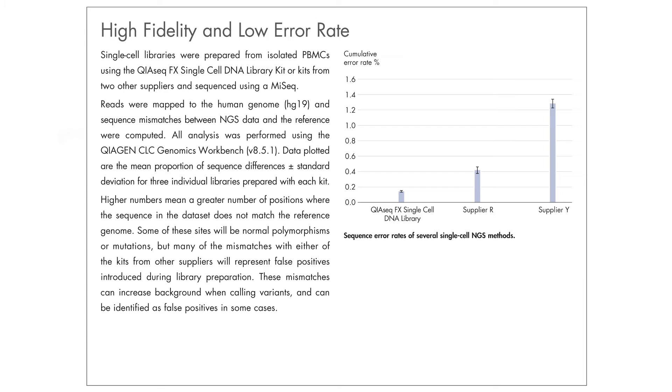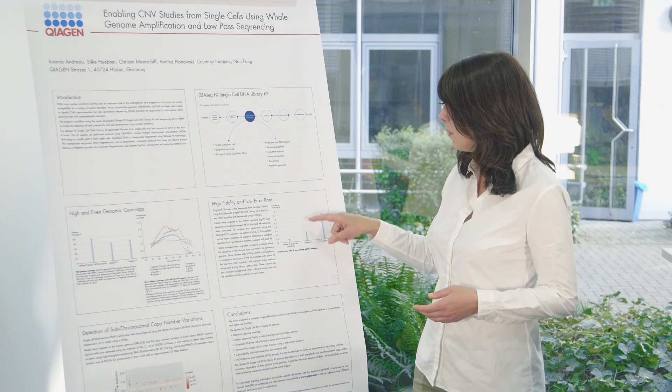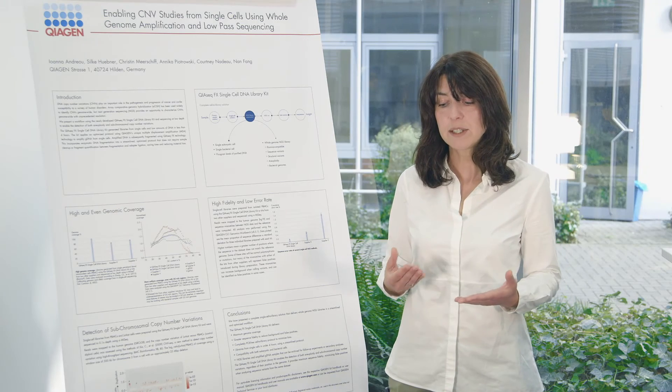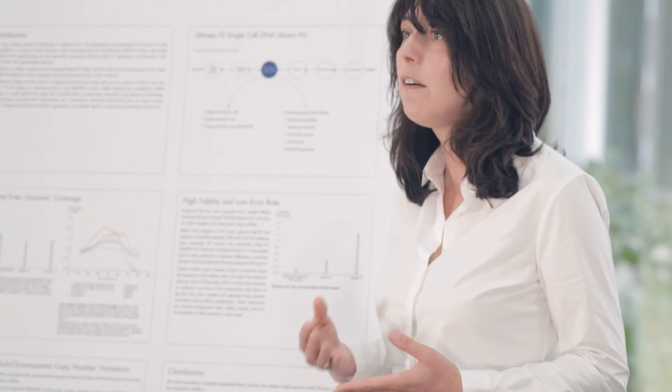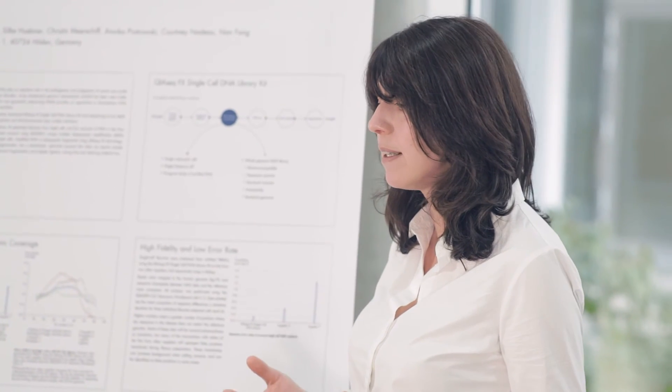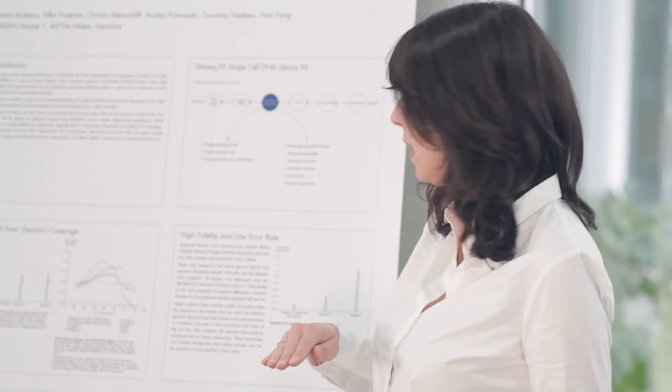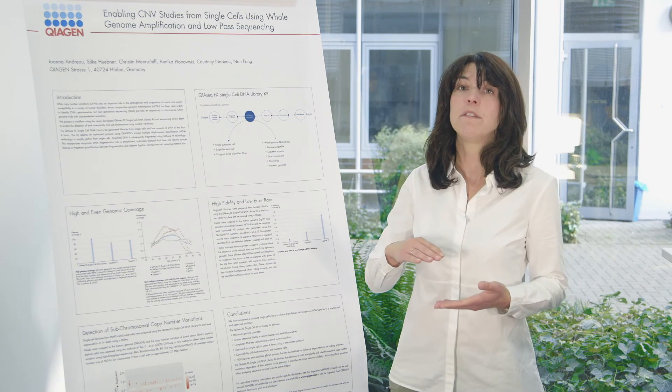What does it mean? Of course some of these mismatches will represent polymorphism or mutations that are in the genome we are studying, but if you look here at the difference, most of the other will be actually mismatches that are coming from the library preparation, and will strongly affect the analysis since they will increase the background while performing calling of variants and will result in a lot of false positive results.